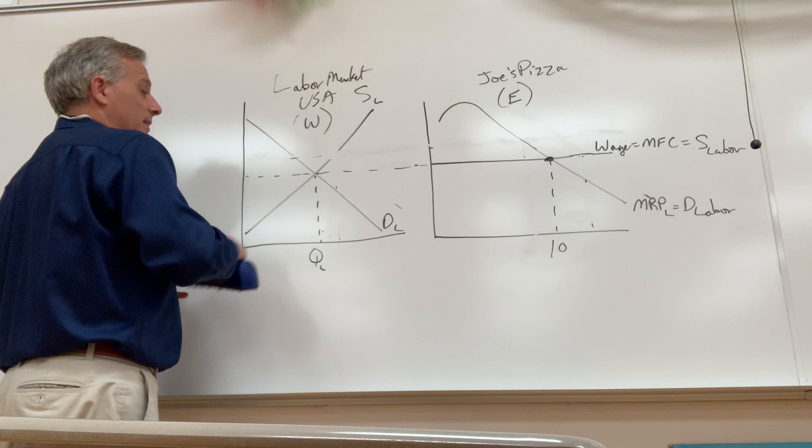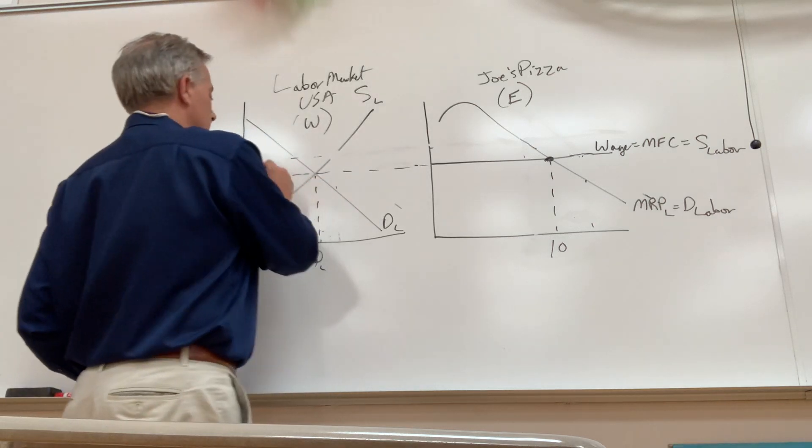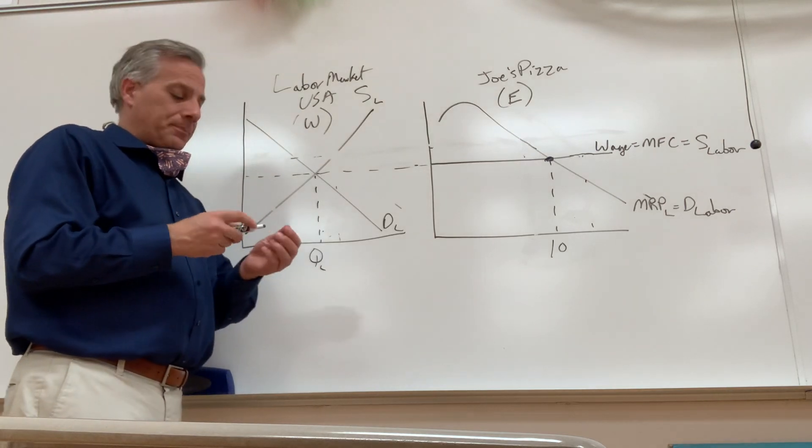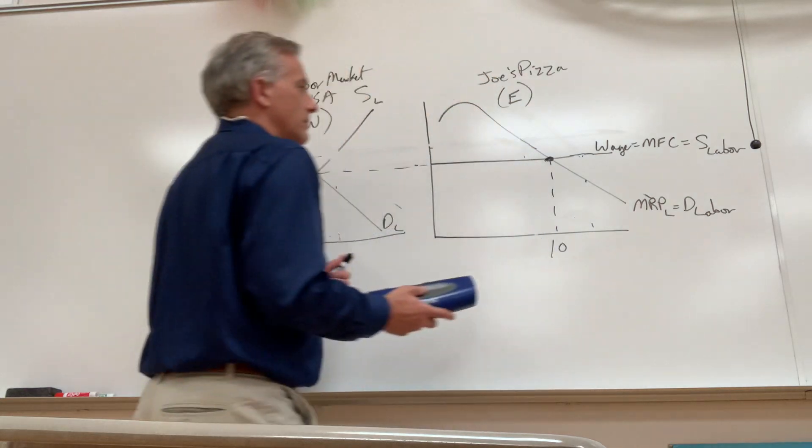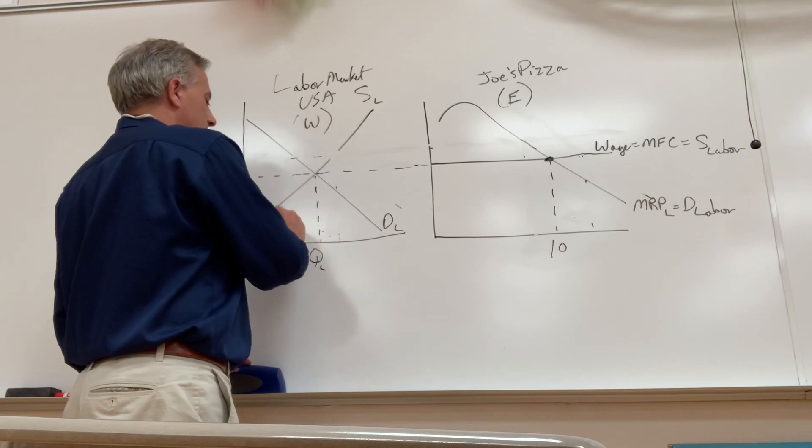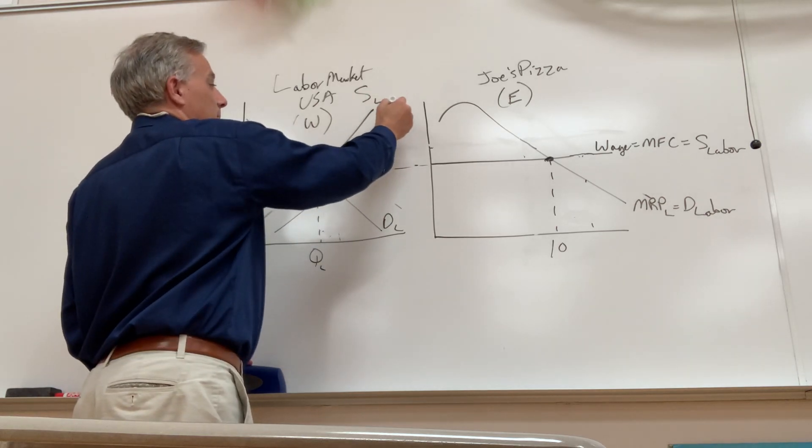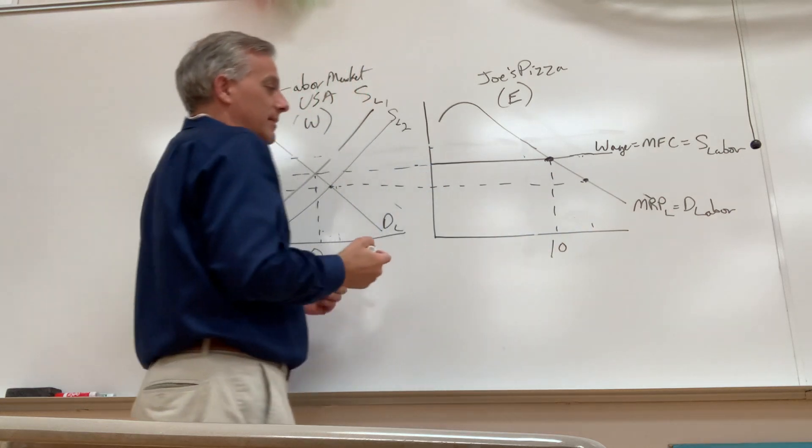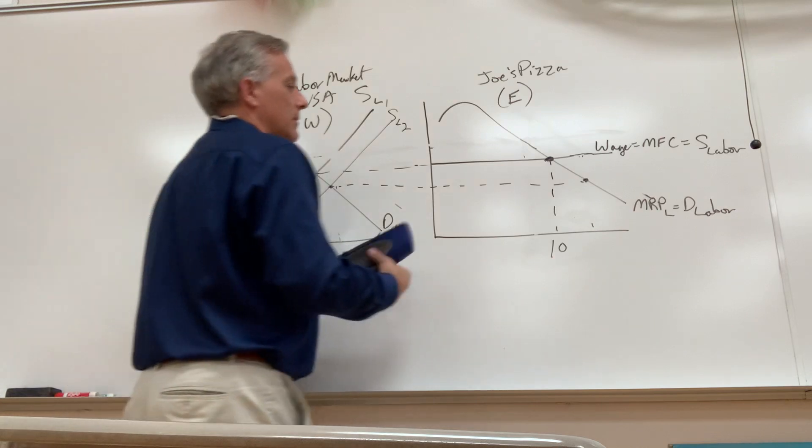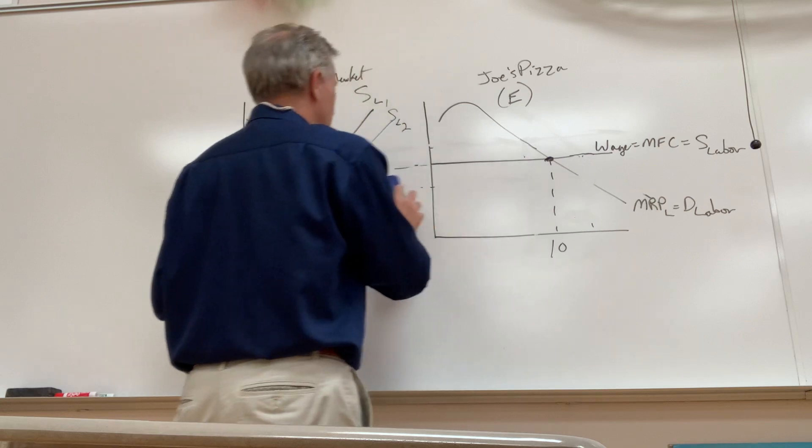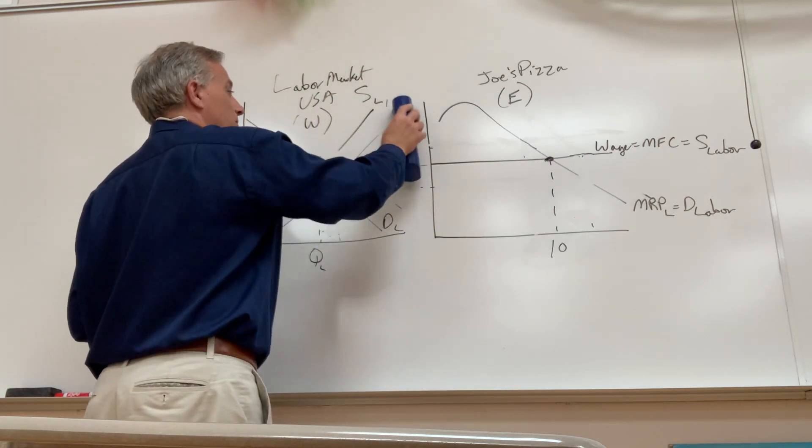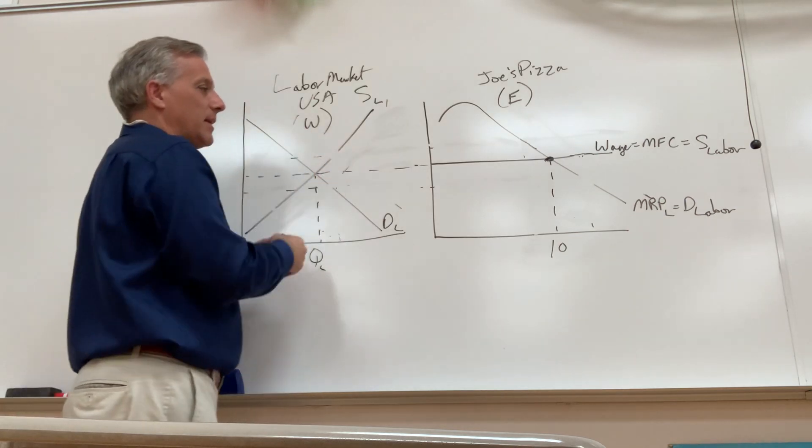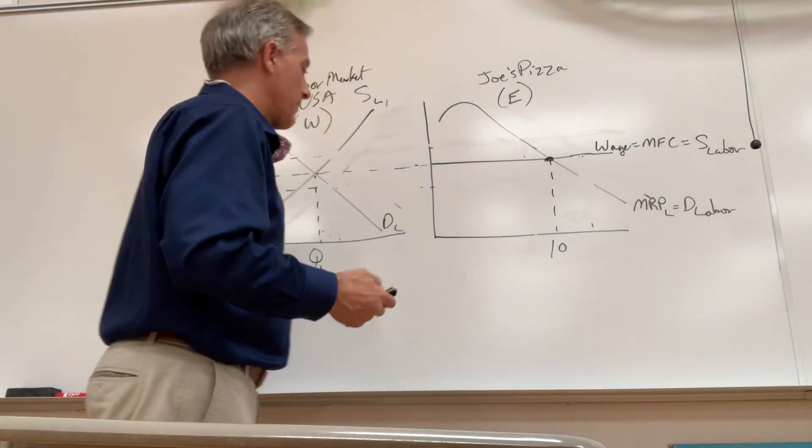And conversely, if the demand for labor in the labor market decreases, that would push wages down, okay? And then Joe's Pizza would hire more workers. Let's see, if supply of labor changes, just follow, let's say there's an increase in the number of people in the population, the labor force, wages go down. That's going to lead to more people getting hired at a lower wage, okay? All righty. And that's in general. That's why employers tend to be for immigration, because you're going to get an ability to pay a lower wage and hire more employees and become more profitable.